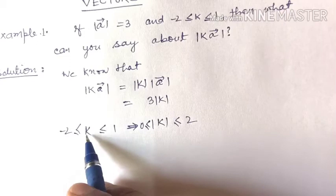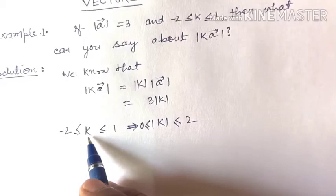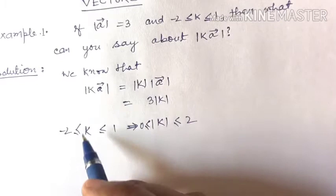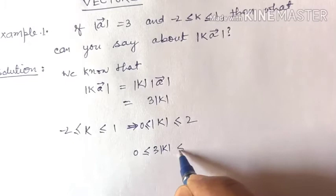Since k takes values from minus 2 to 0 and 0 to 1, when you take mod of minus 2, it becomes positive 2. So mod of k only takes positive values, lying between 0 and 2. Therefore, 3 mod of k is more than or equal to 0 but less than or equal to 6.